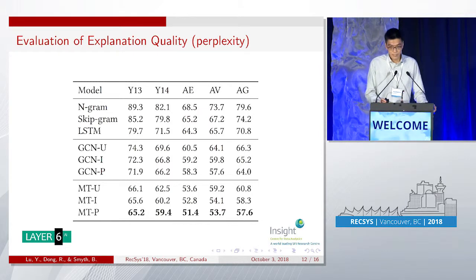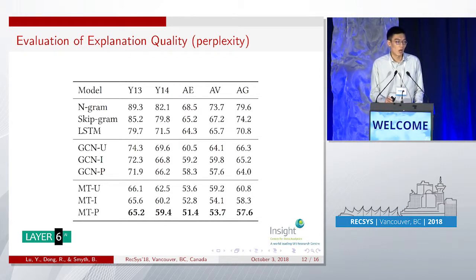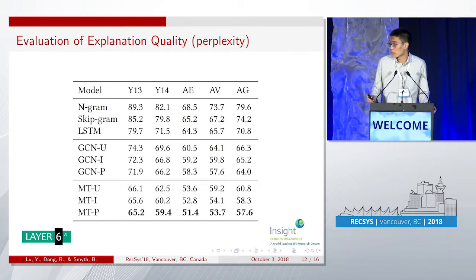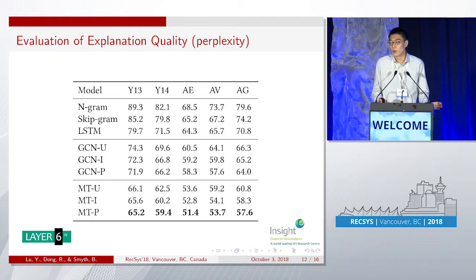To facilitate the training of multitask learning, we introduce an iterative optimization methodology that alternates between the optimization of the sequence-to-sequence learning model and the matrix factorization. Briefly, we first fix the latent factors learned by matrix factorization and update the parameters of the sequence-to-sequence model. After that, we fix the parameters of the sequence-to-sequence model and then optimize matrix factorization.